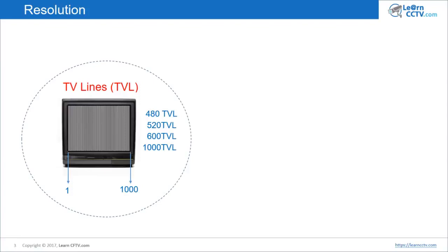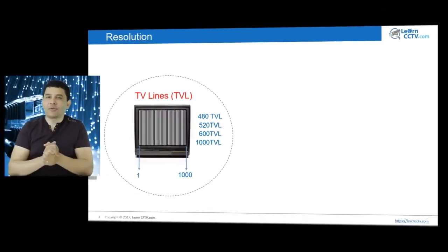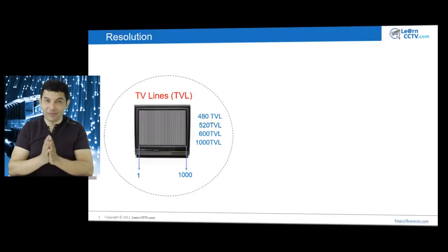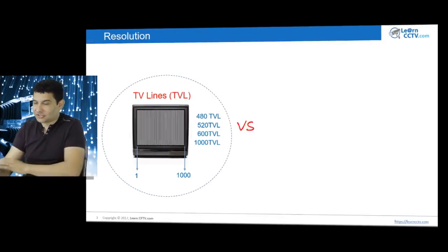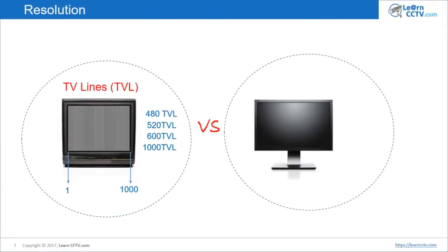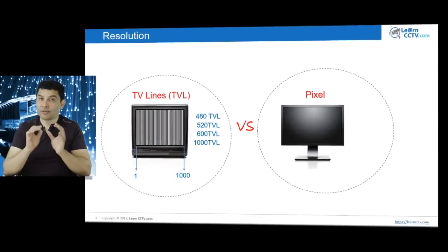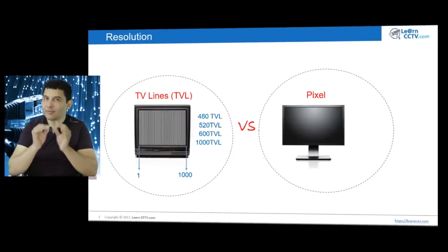It's important to know about TV lines because it's a traditional system. When you buy a camera, you buy those cameras based on TV lines. Now let's compare it with a digital system. In a digital system, you have your monitor and then you have pixels — you don't have TV lines anymore. We're talking about pixels now, and then you buy an IP camera.